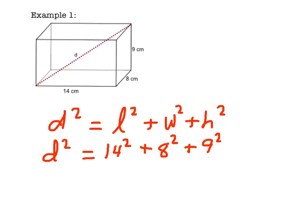Our third step is to square the terms. We still don't know D, so I'm going to rewrite that as D squared. 14 squared is 196, plus 8 squared, which is 64, plus 9 squared, which is 81.